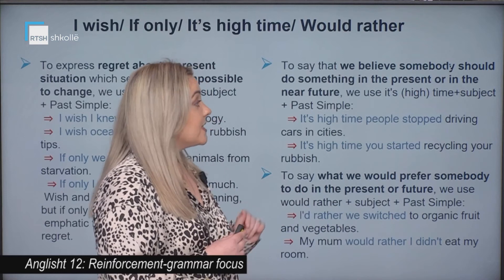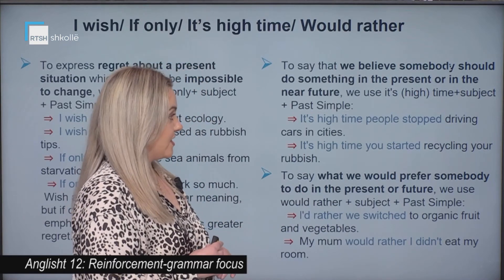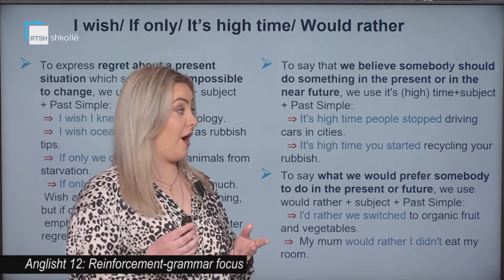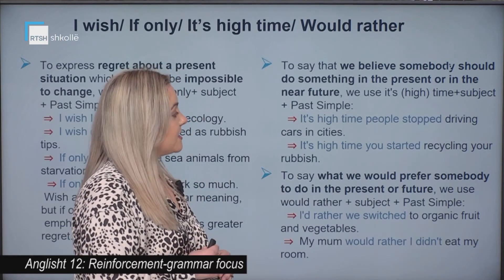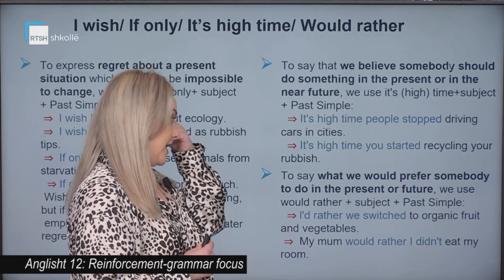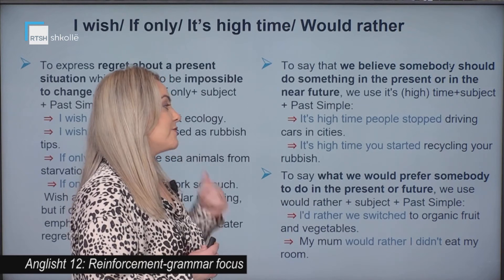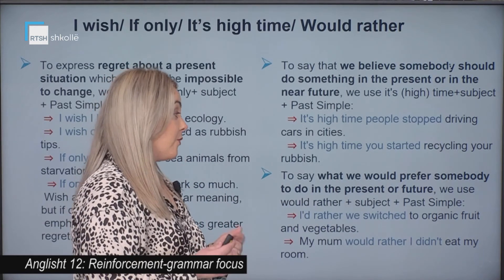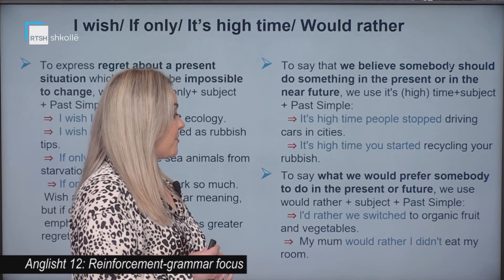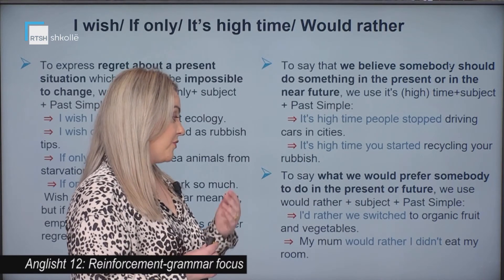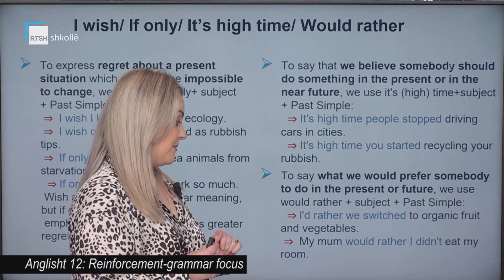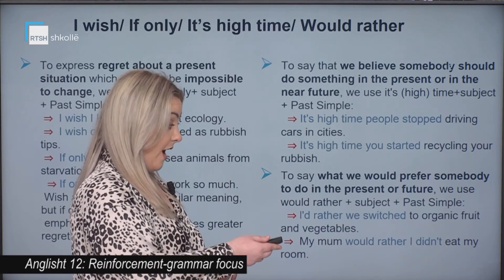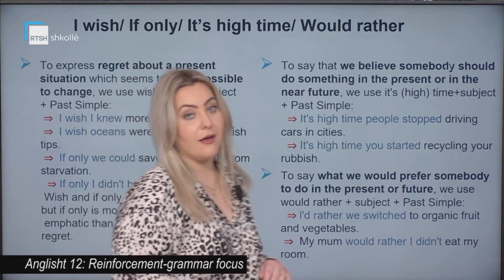To say that we believe somebody should do something in the present or near future, we use 'it's time' or 'high time' plus subject plus past simple. For example, 'it's high time you started recycling your rubbish.' To say what we would prefer somebody to do in the present or future, we use 'would rather' plus subject plus past simple. For example, 'my mum would rather I didn't eat in my room.'